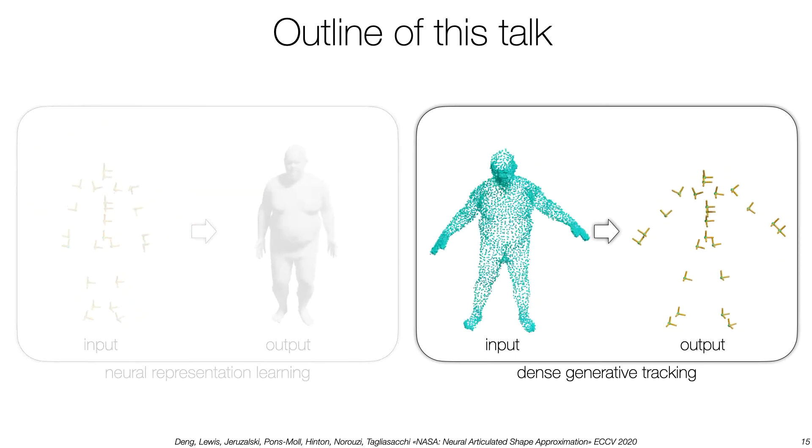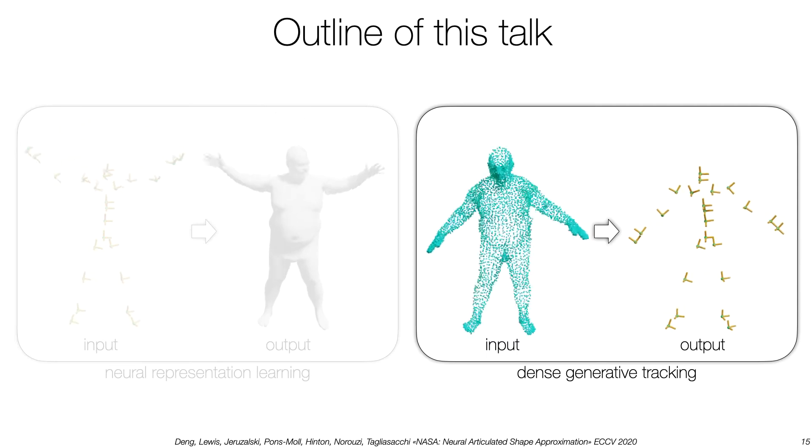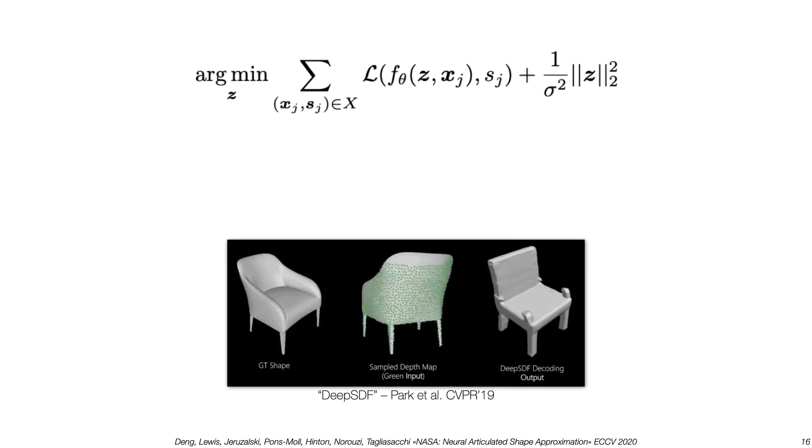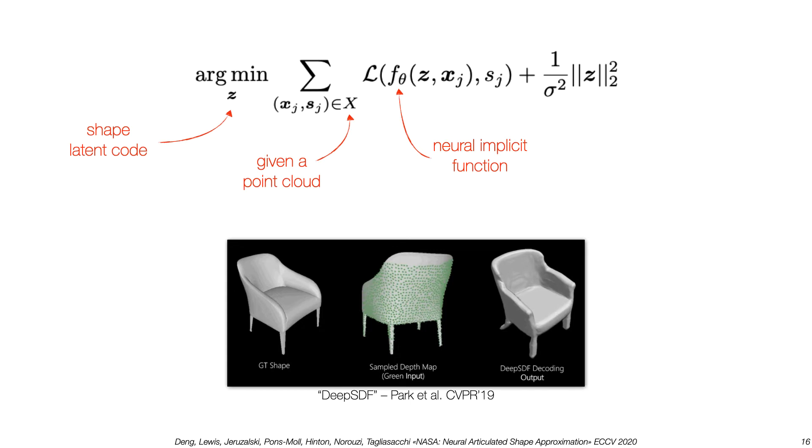In particular, we focus on dense generative tracking. We take inspiration from DPSDF by Park et al. DPSDF first learns an implicit 3D representation across a shape collection. Then, given a point cloud, the optimization searches for the shape code within the latent space so that the model fits to the data. The process is guided by a simple regularizer.